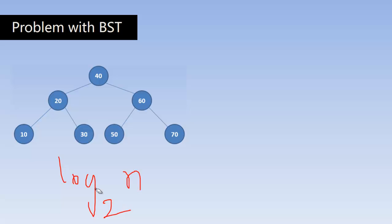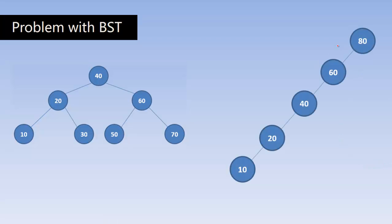Now when the tree is unbalanced — say there is a situation where you insert 80, then 60, then 40, then 20, then 10 — this is also a binary search tree but it is not balanced, meaning every node has not got two children. If I want to search an element in this unbalanced binary search tree, the time complexity will be O(n).